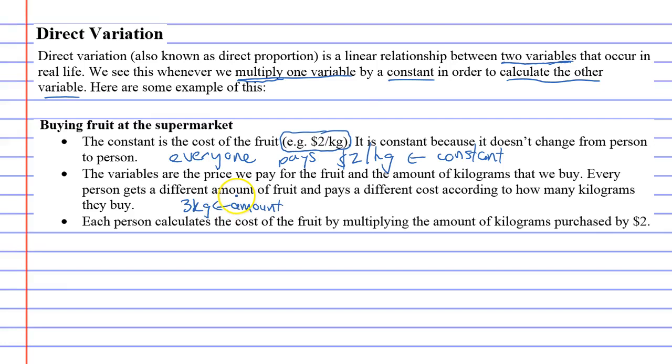One of the variables, because it changes from person to person. And then because you get three kilograms of fruit at $2 a kilo, you're going to pay $6. This is your cost. Now, your cost and the amount of kilograms you buy will be different when the next person comes along. They might get four kilograms at an $8 cost.